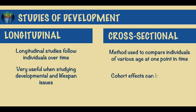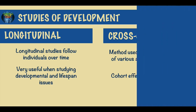Cross-sectional studies consist of comparing individuals of various ages at one point in time. They are also very useful in developmental research and often used as an alternative to longitudinal studies because they are easier to set up and generally cheaper. However, cohort effects, which are the differences between all of the groups, can arise and be problematic.